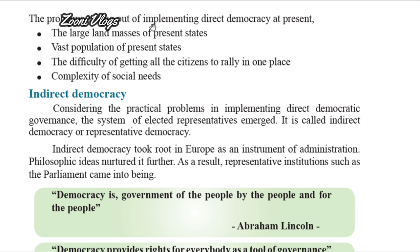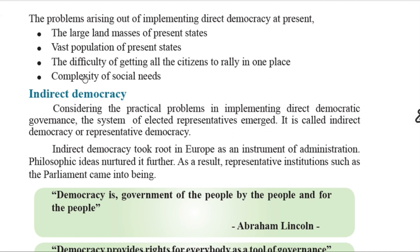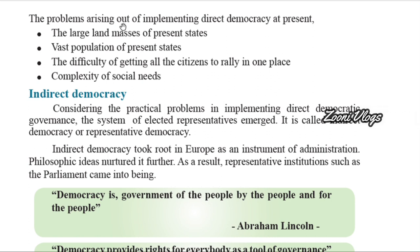The problems arising out of implementing direct democracy at present include: the large masses of population in present states, the vast population making it difficult to get all citizens to rally in one place, and the complexity of social needs. These are the problems of implementing direct democracy at present.